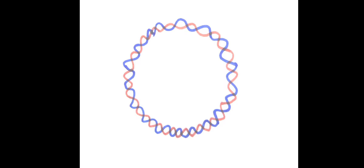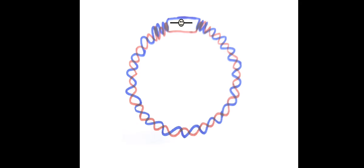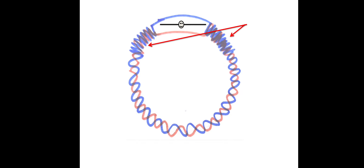Suppose this is our bacterial DNA, a circular DNA which is about to replicate. For replication, we need to unwind the double strand. The DNA helicase enzyme separates the double strands into single strands, allowing each strand to be copied. As the two strands unwind at the edges, the DNA becomes super-twisted. When this twisting and coiling occurs too much, it is said to be negative supercoiling.